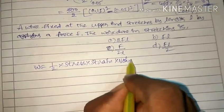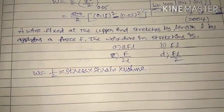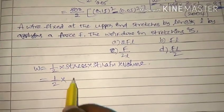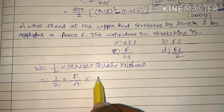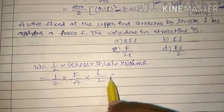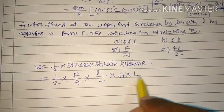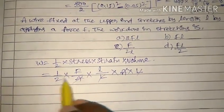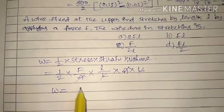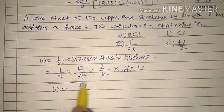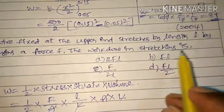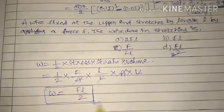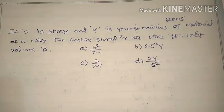Expanding: W = (1/2) × (F/A) × (l/L) × (A·L). The area A and length L cancel out, giving W = Fl/2. So the work done in stretching the wire is Fl/2, and option D is the right answer.